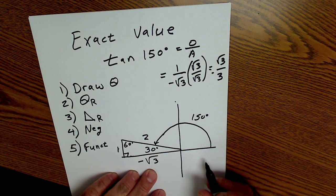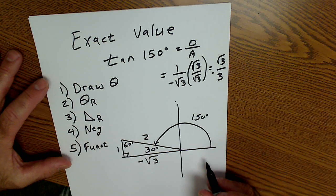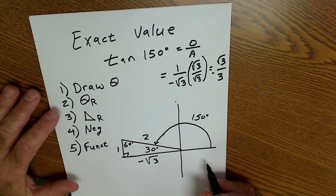Exact value, right triangle, trig problem. Five steps. Go through these steps and you won't miss any of the pieces.